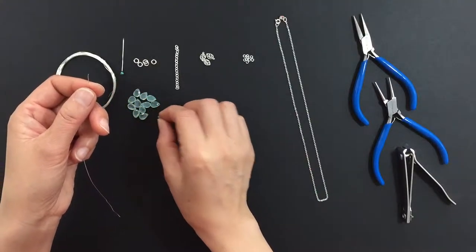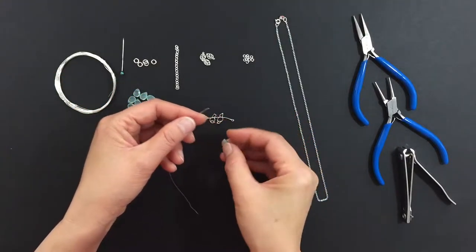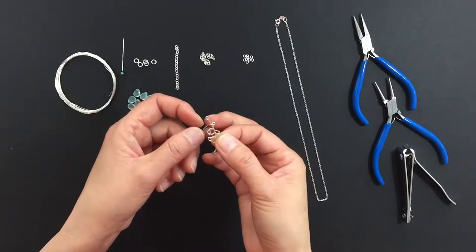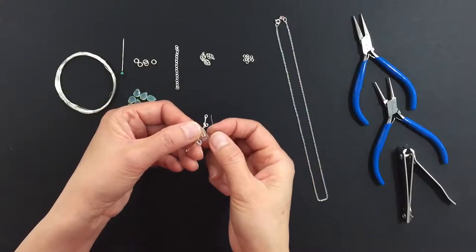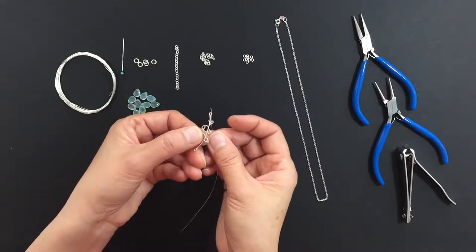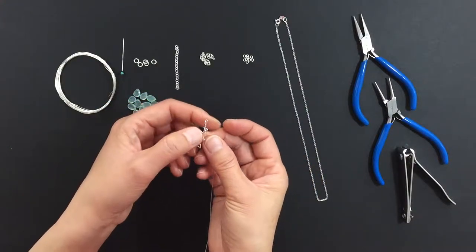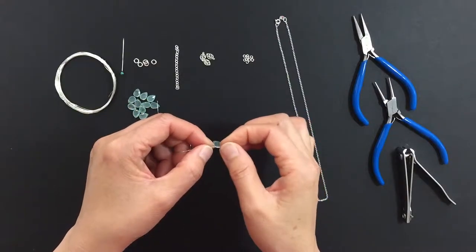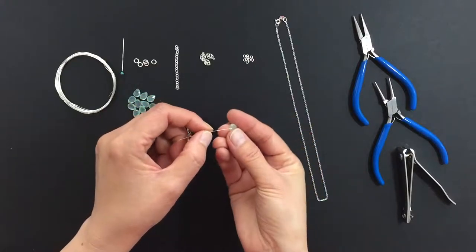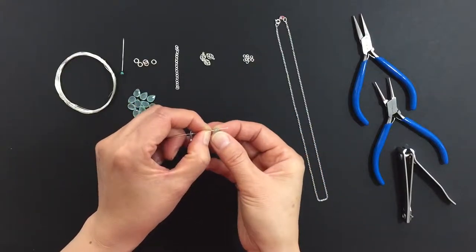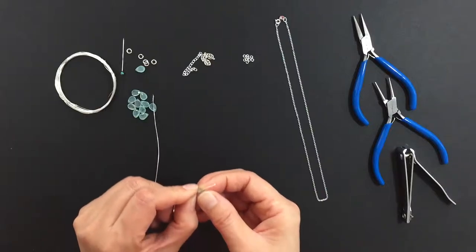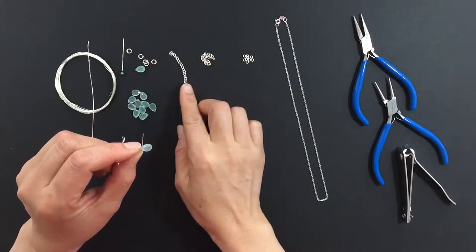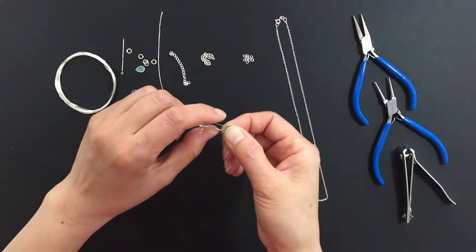To start, we're going to attach the chalcedony to the lovebird connector. Thread a piece of the 26 gauge wire through one of the loops of the connector. Then slide on the chalcedony. Leave yourself three quarters of an inch on the short end of the wire and bend it over the edge of the stone.